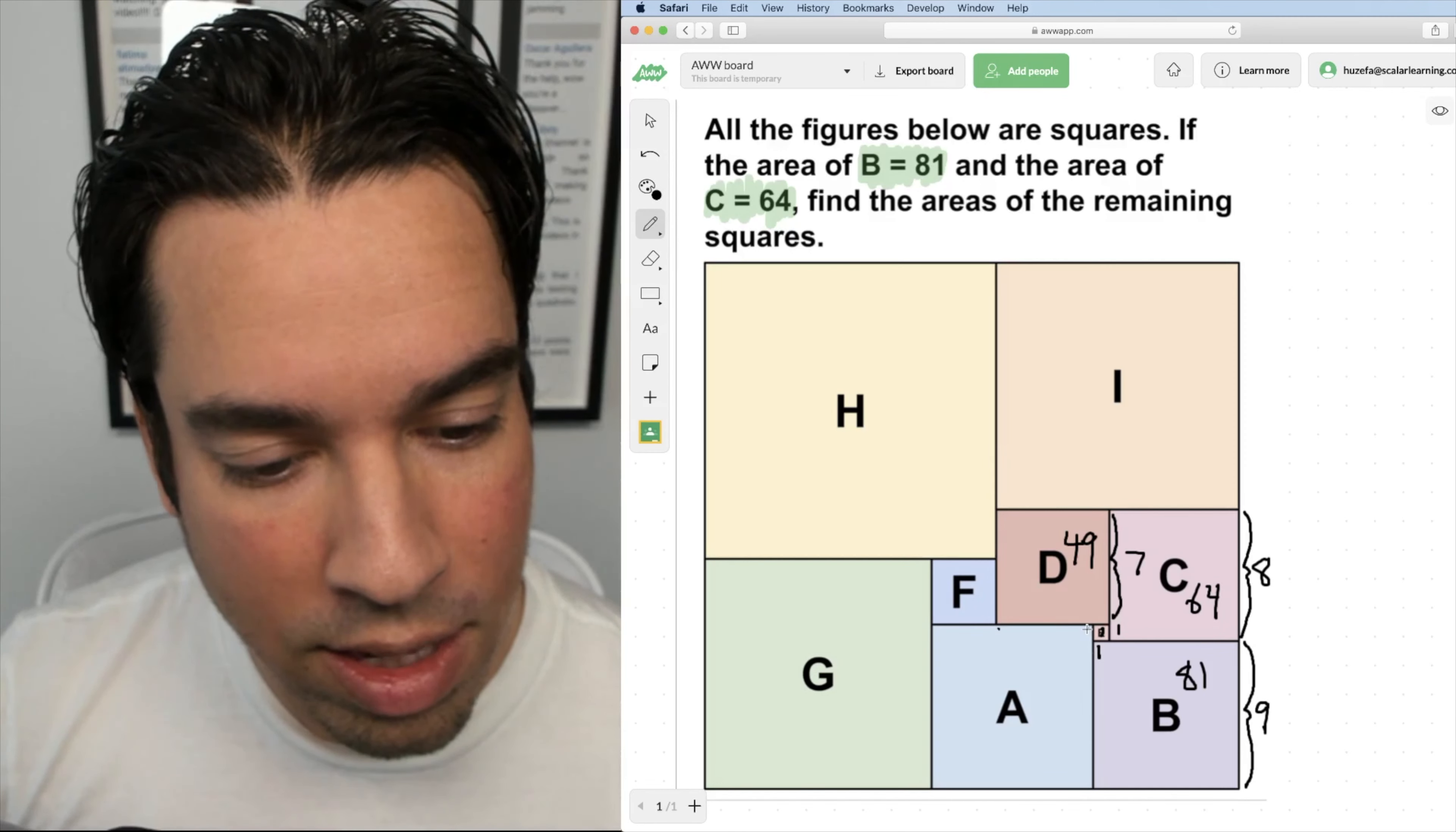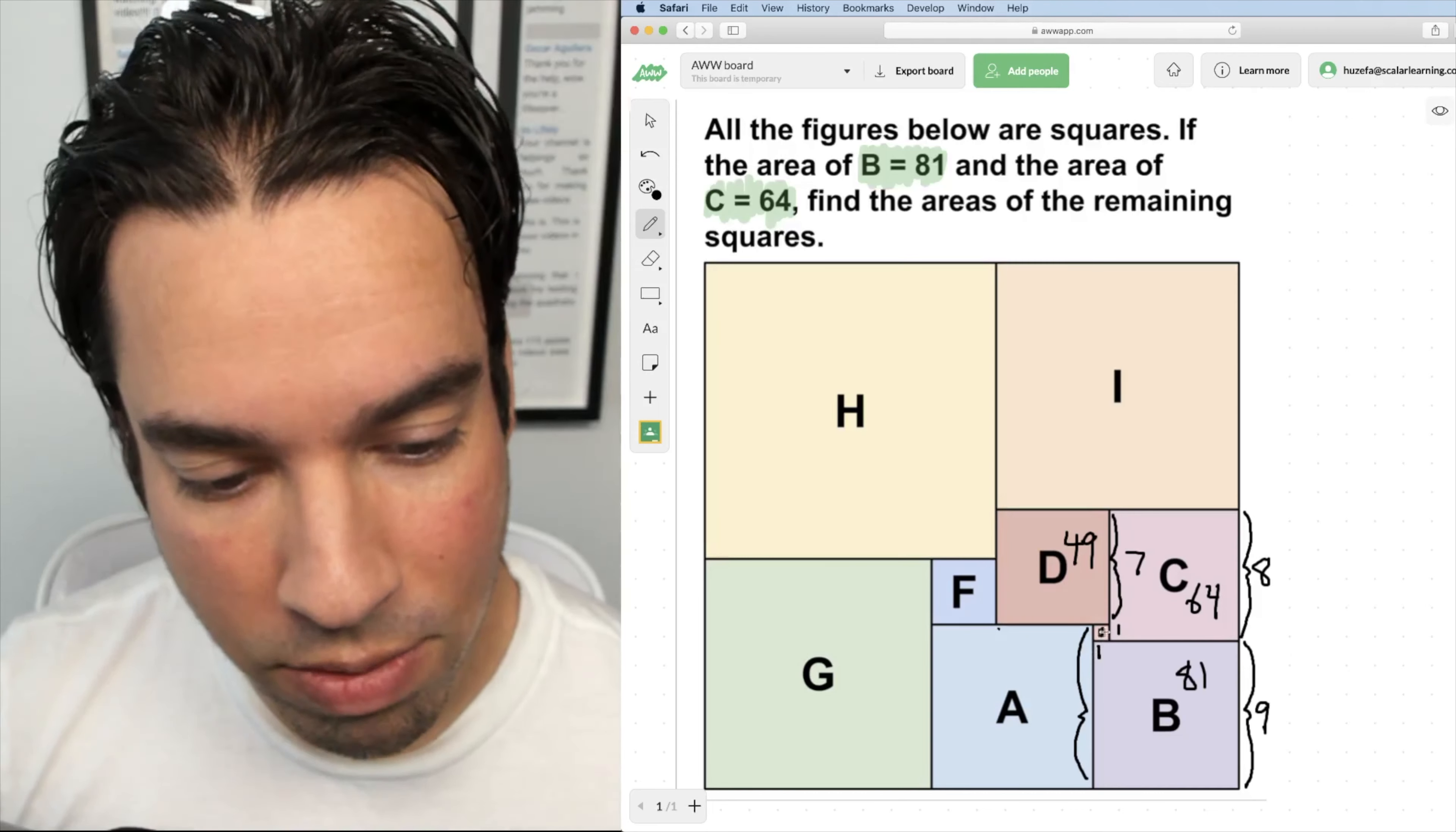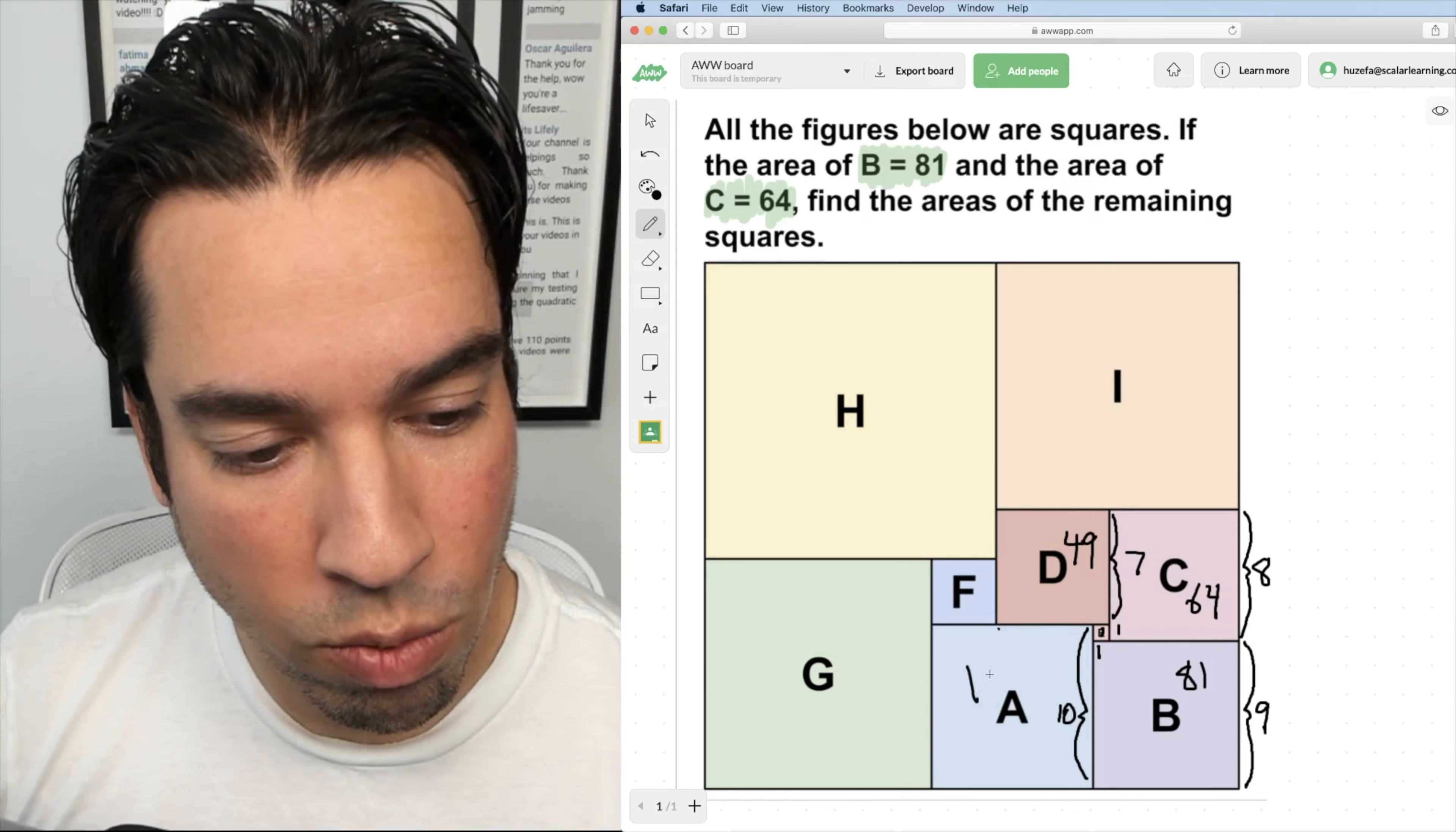Next, I know that this length right here is one more than B because it's again, it has a difference of E. So that makes this guy have a side length of 10 with an area of 100.